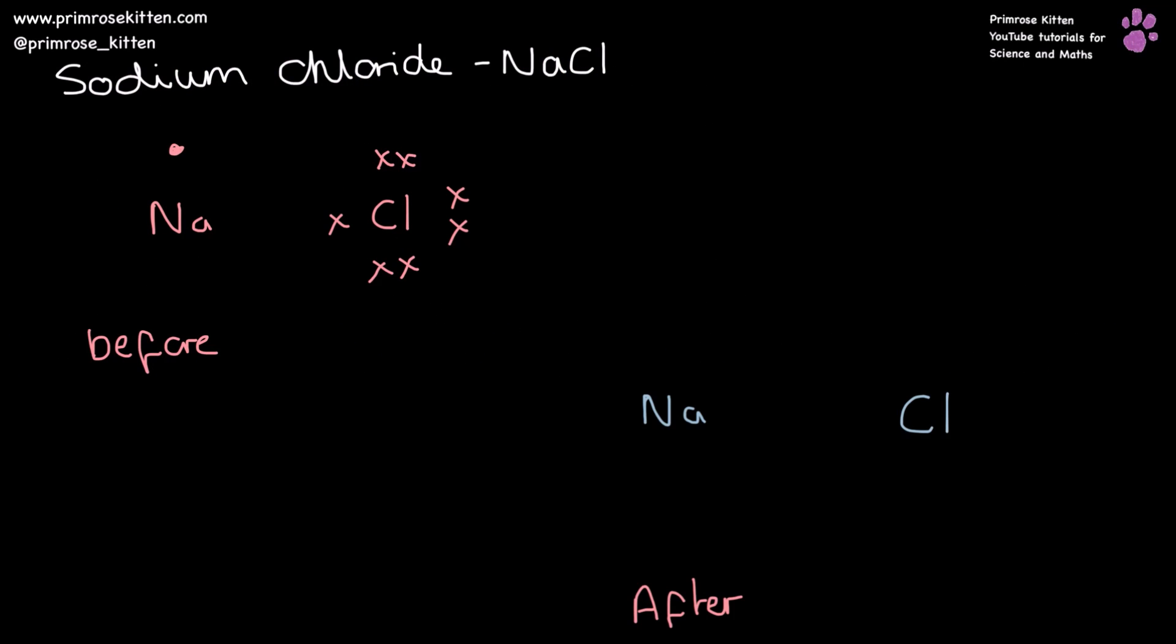Looking at the bonding between sodium and chlorine, sodium has one electron on the outer shell and chlorine has seven electrons on the outer shell. What is going to happen here is that sodium is going to lose this electron and it's going to be transferred over here to the chlorine.